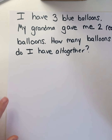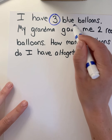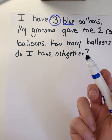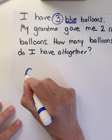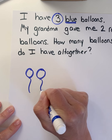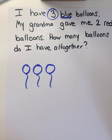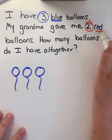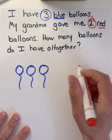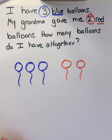How many balloons did I start with? Three. What color were those balloons? Blue. So I'm going to use the same colors to match, just to help me understand. I have three blue balloons — I'm going to draw them: one, two, three. Those are my three blue balloons. And then my grandma is going to give me some more. How many did she give me? Two. What color were they? Red. So I'm going to draw those two balloons: one, two — just like that.